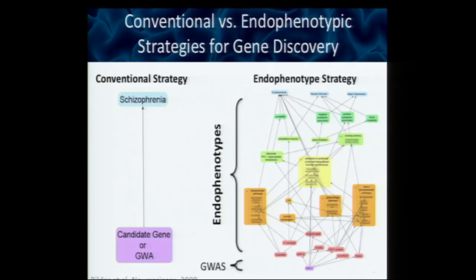In an endophenotype strategy, you start with a genetic variation, then look at the genetic variation to its proteomic variation, to its cell signaling, to its cell populations, to neuroanatomy, neurophysiology, to behaviors, and all the way up to the notion of syndromes. Any point along this path, any measure could be considered an endophenotype, because as long as you're going from a genetic effect to the behavior, anywhere along that pathway, you could consider something to be an endophenotype.